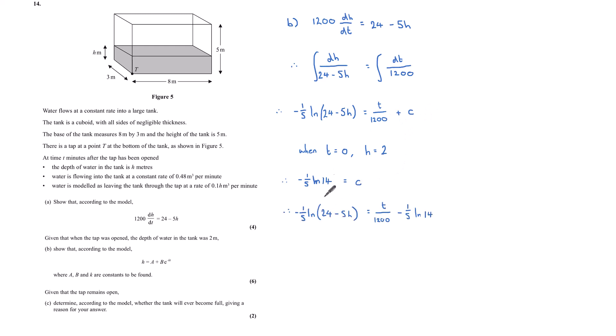Given I now have c, I can put that back into my equation. I've got negative 1 fifth ln 24 minus 5h is equal to t over 1,200 minus 1 fifth ln 14. I've got quite a complicated looking thing here, but it is in terms of h and t. I need to start doing some rearranging.